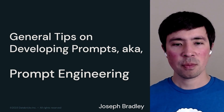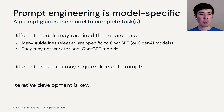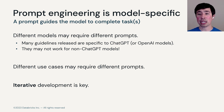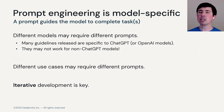Let's talk about prompt engineering. We're going to have a lot of general tips, but we're going to start off with a caveat that prompt engineering is model-specific. A prompt will guide a model to complete the task in the way you wanted, but different models may require different prompts. A lot of guidelines you'll see out there are specific to one of the most popular services, ChatGPT, and its underlying OpenAI models. They may not work for non-ChatGPT models, but a lot of the techniques do carry over, even if the specific text of the prompts do not.